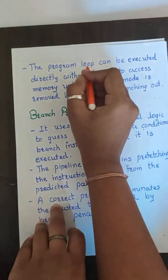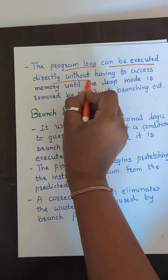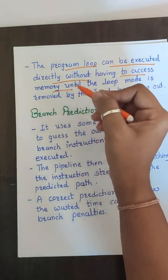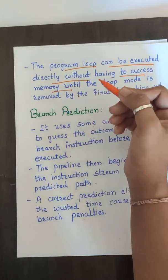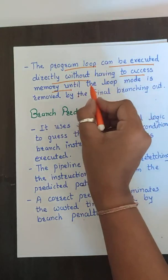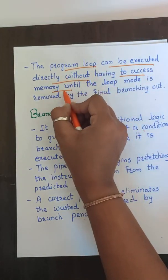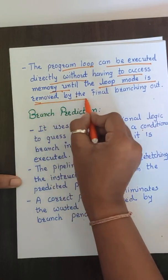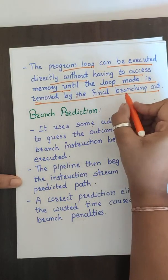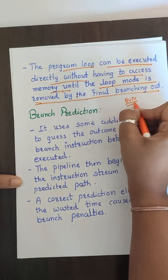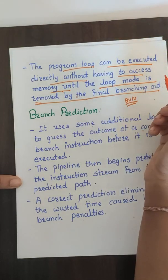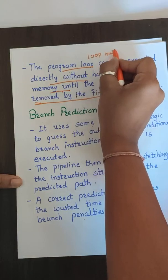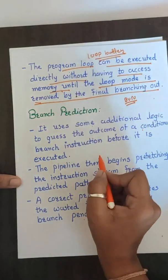Whenever a program loop is detected, it can be executed directly from the loop buffer without accessing memory. Since we need to run the loop repeatedly for a certain period of time, the loop buffer provides direct access. This continues until the loop mode is removed by the final branch out — only then is control given to another instruction. Until that point, data is taken from the loop buffer only.